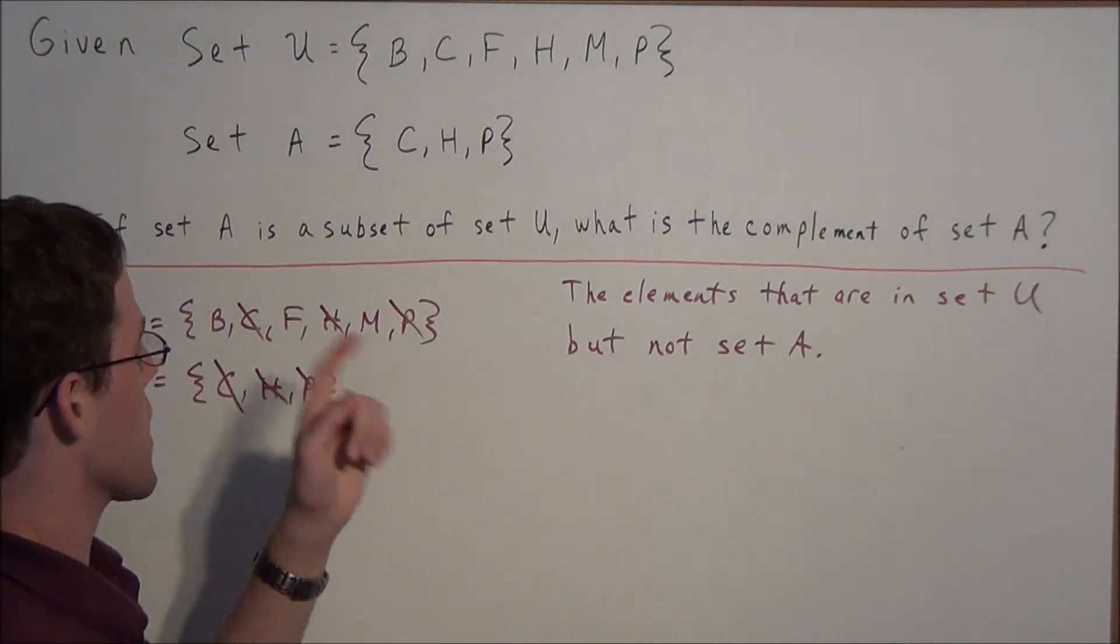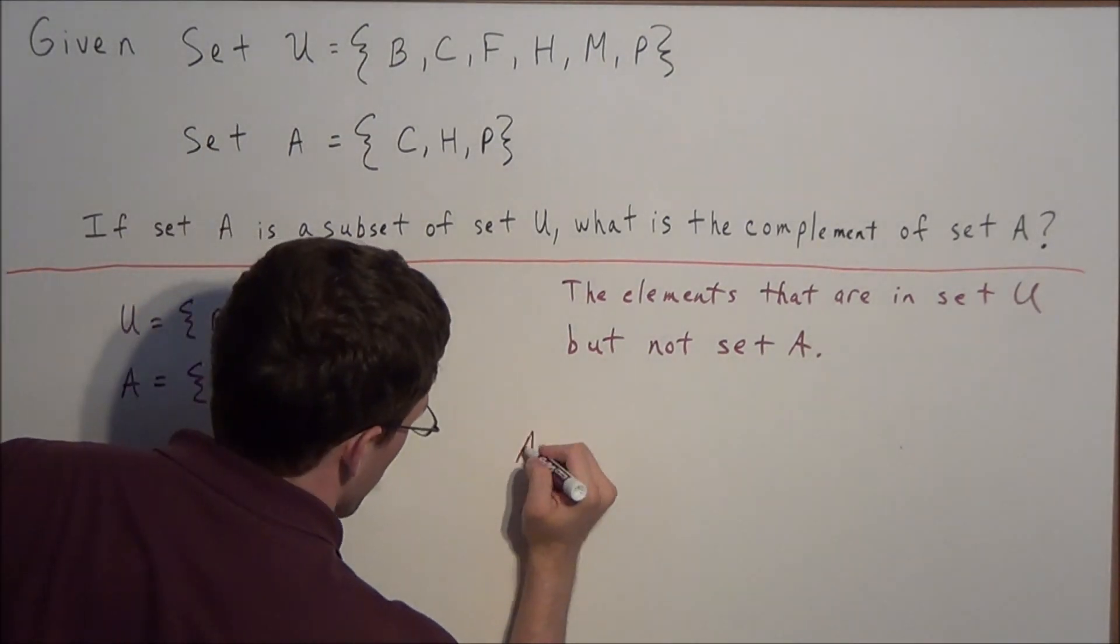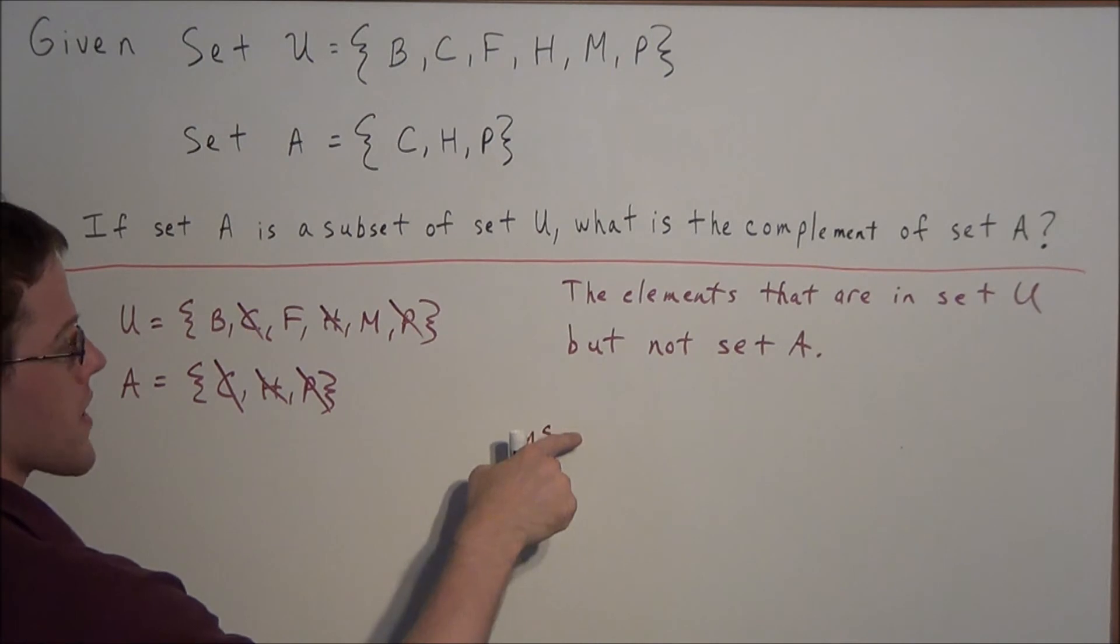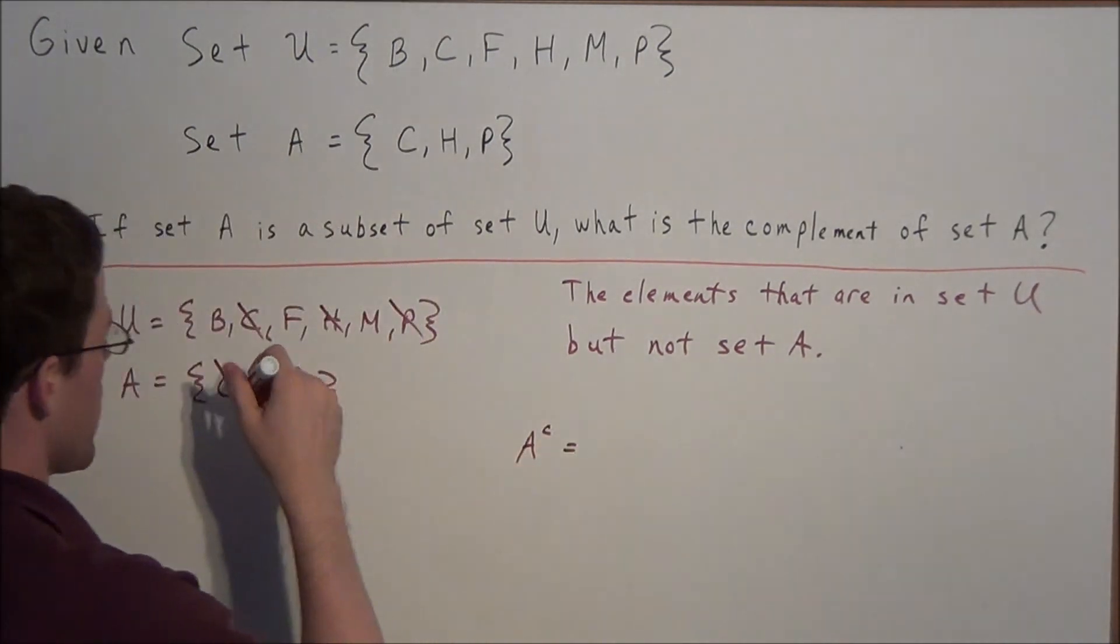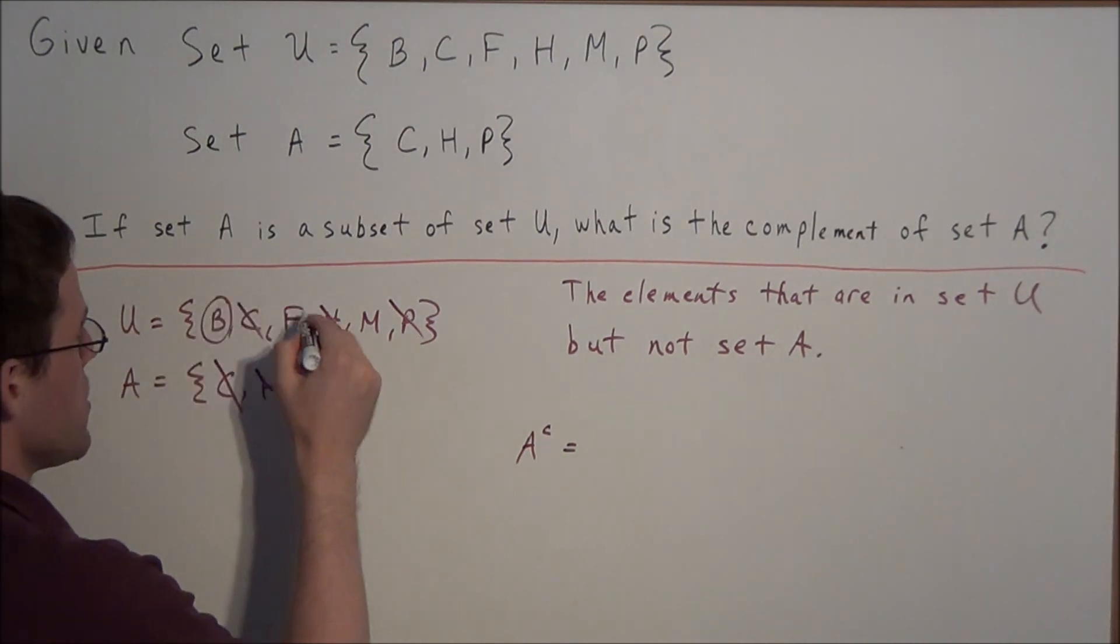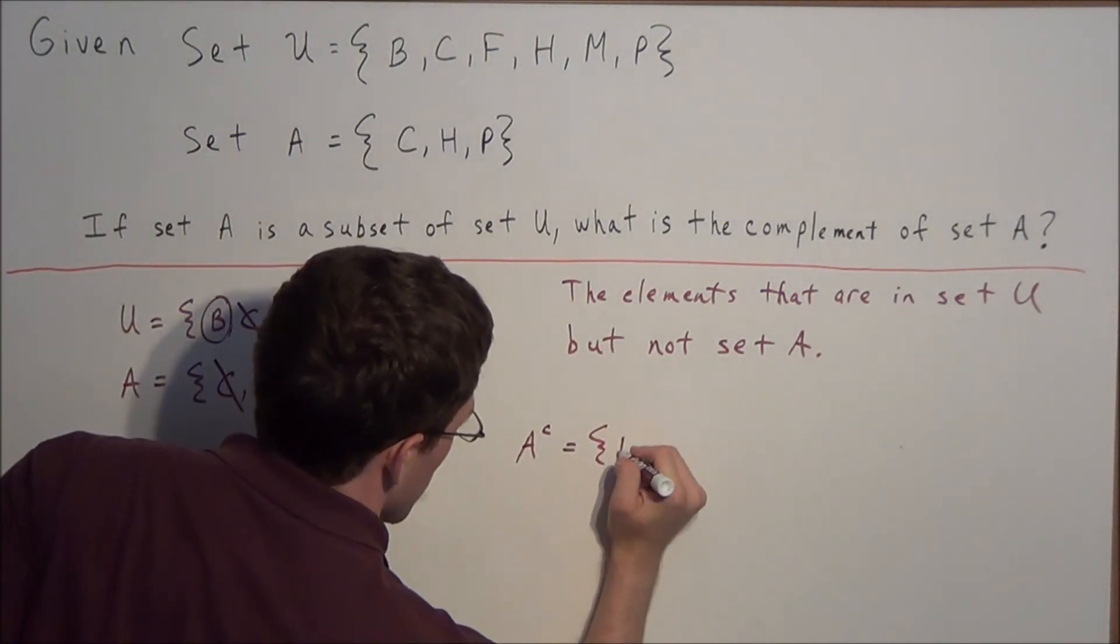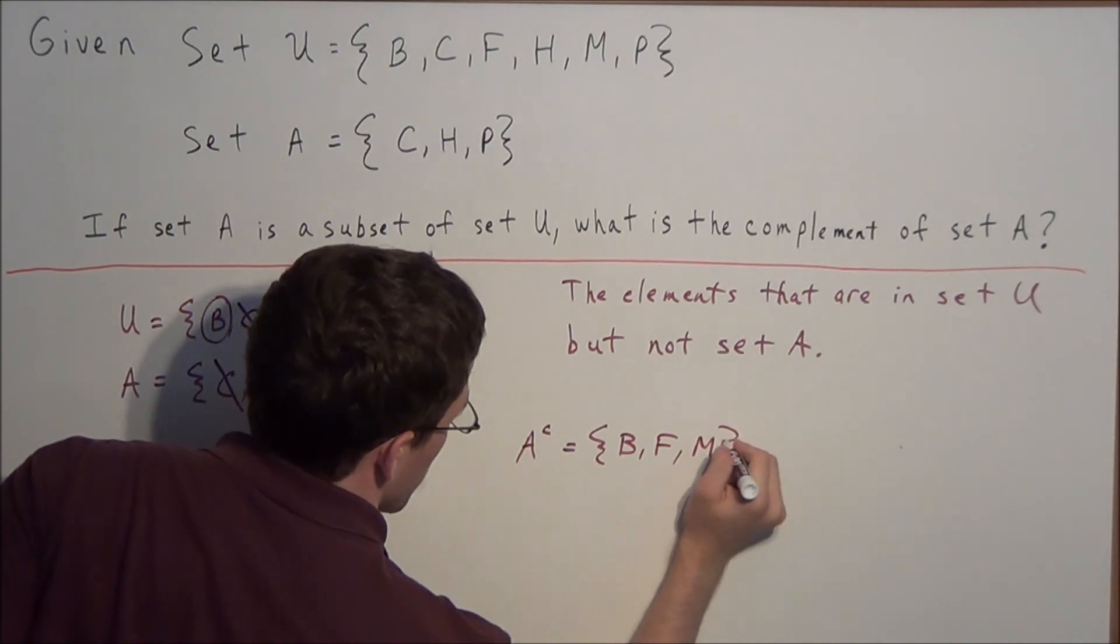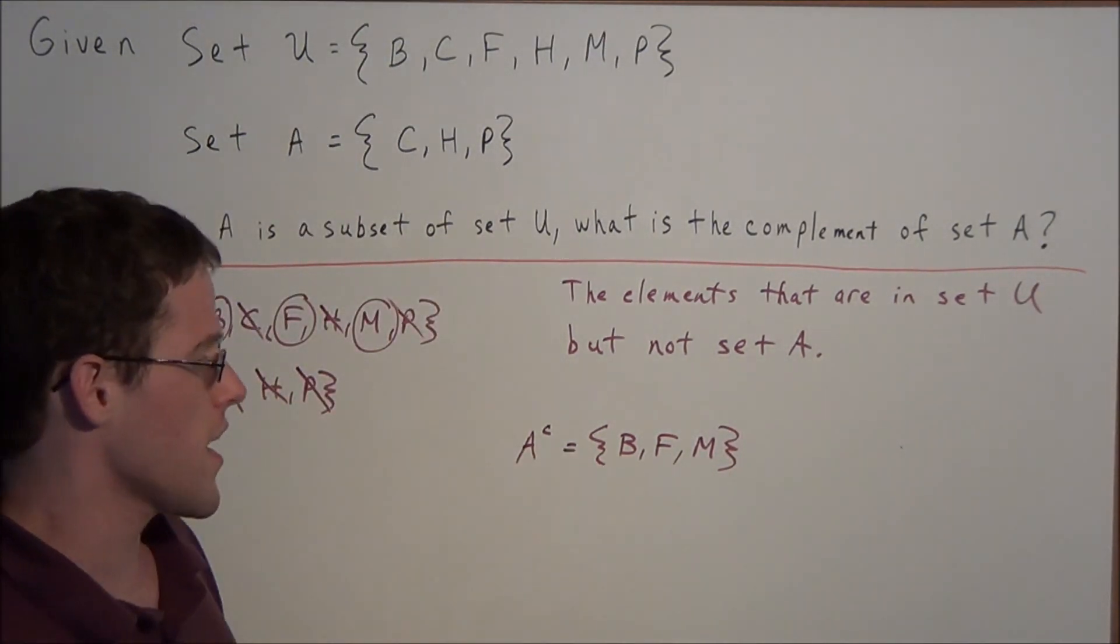So if we're looking for the complement of set A, we can indicate that with A, and we put a C as a superscript, that stands for complement. So A complement is the set of all elements that are remaining in U that we didn't cross off. So we have B, F, and M. So this set consists of B, F, and M. So this would be the complement of set A.